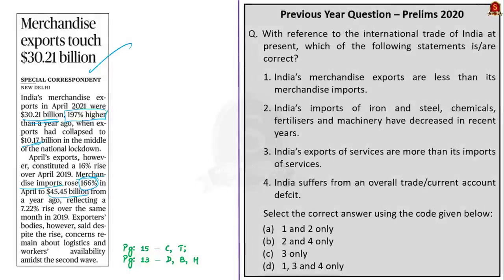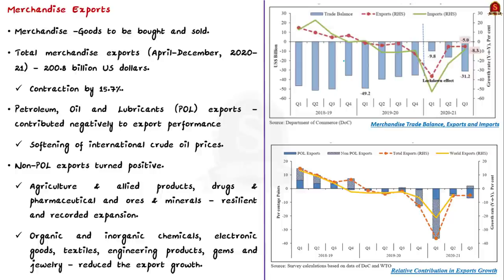You may think why we are discussing merchandise imports and exports — in last year's UPSC Civil Services Preliminary Examination 2020, there was a line regarding merchandise imports and exports in a question. Sometimes when we see news like this, taking note of it will help in attending a tough question. In this context, let us discuss the merchandise trade portion of the Indian Economic Survey of 2021. Note that merchandise simply means the goods to be bought and sold.